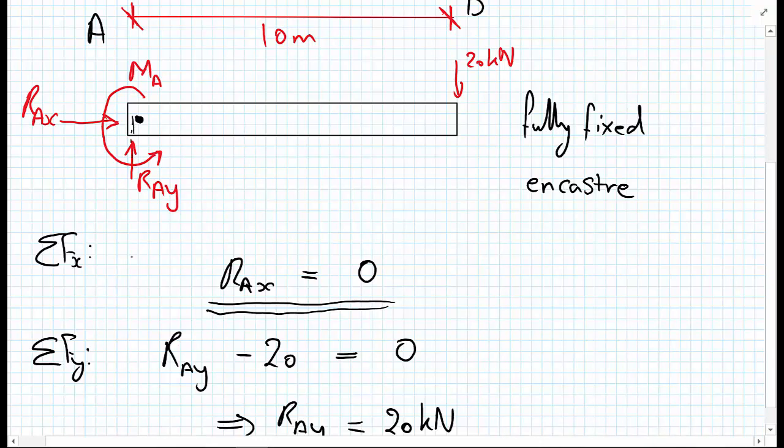R_AX, the line of action goes straight through that point. But the 20 kilonewtons is acting at 10 meters away from there. And one thing not to forget is that we have an M_A, a moment.